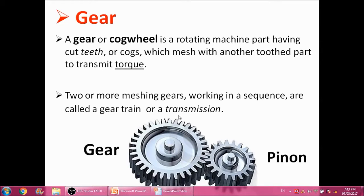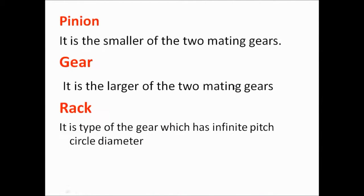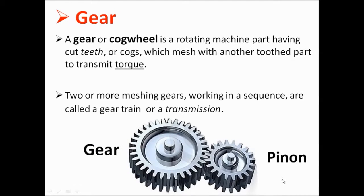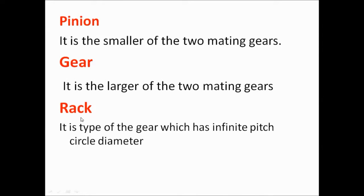The first term in gear terminology is pinion. Pinion is the smaller of two mating gears. As you can watch in this diagram, the smaller gear is the pinion and the larger one is called the gear. Gear is the larger of two mating gears. Then, rack — a rack is a type of gear which has infinite pitch circle diameter.